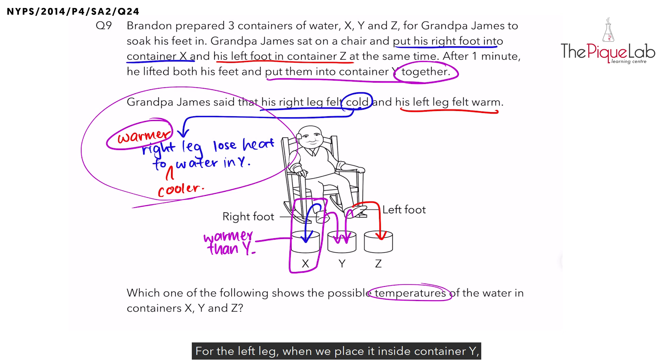For the left leg, when we place it inside container Y, he said that his left leg felt warm. So if his left leg became warmer, did the left leg gain heat or lose heat? Warmer means the left leg gains heat.